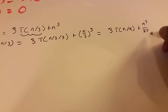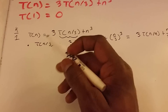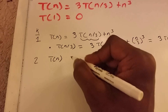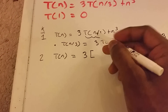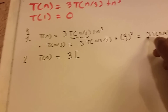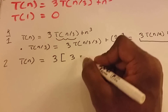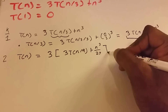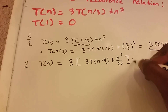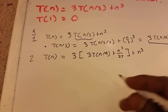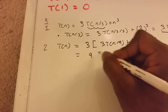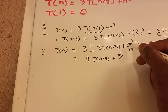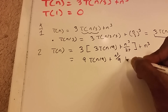So now what we can do is plug this back into our equation. For k equals 2, our T of n is going to equal 3 times T of n divided by 3, which we said is this equation. So that's 3 times T of n divided by 9, plus n cubed divided by 27. Then we add back our n cubed. Simplifying, we get 9 T of n divided by 9, plus n cubed divided by 9, plus n cubed.